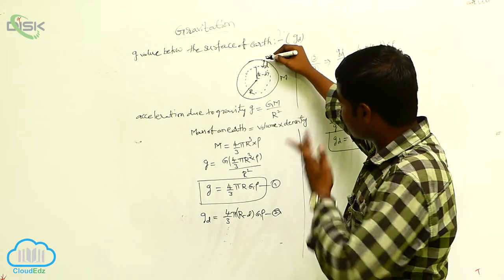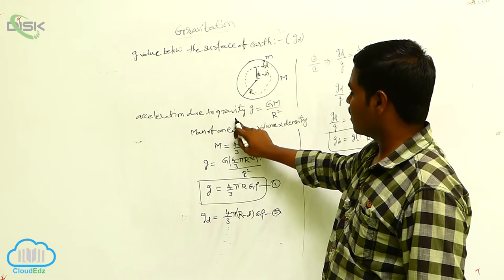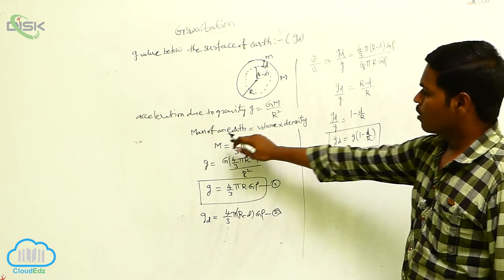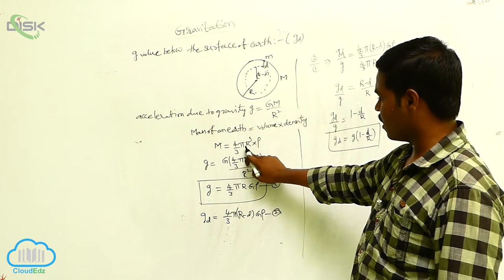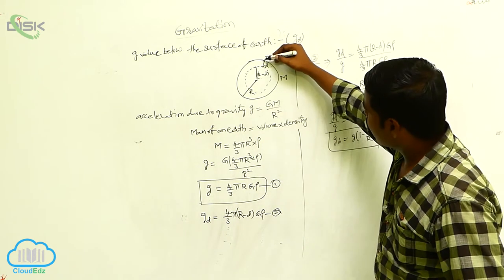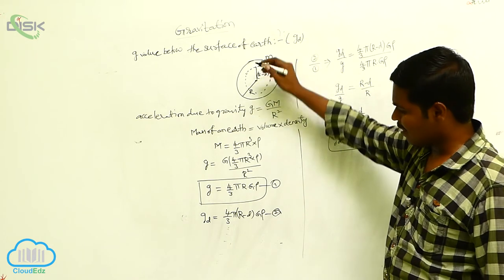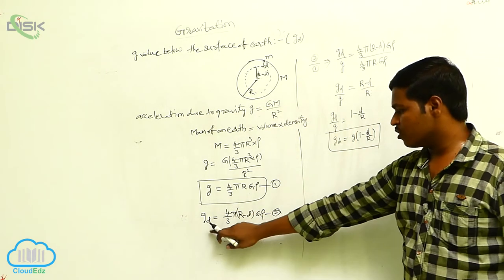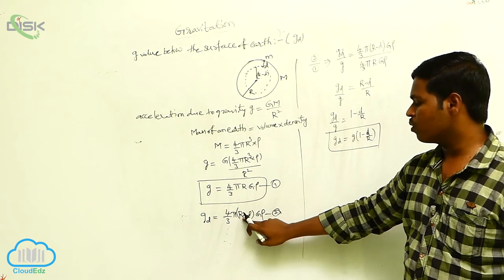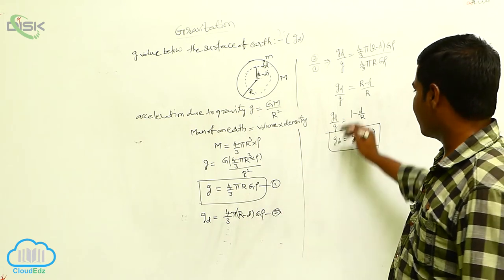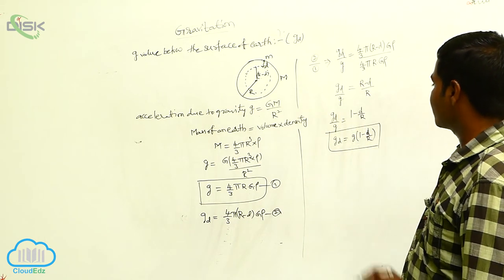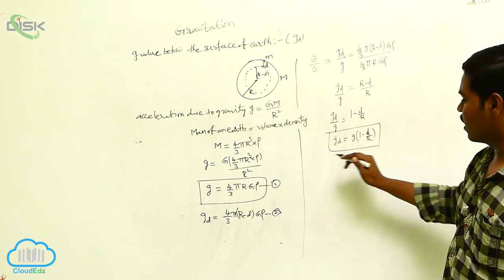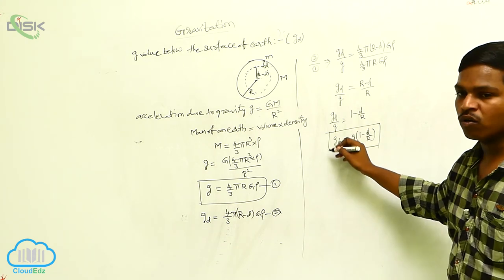On the surface of the earth, the acceleration due to gravity is g equals GM over r squared. Considering the density rho of the earth, the mass of earth equals volume times density, which is (4/3)πr³ rho. If the object of mass m goes below the surface, the distance is r minus d, and the acceleration due to gravity g_d equals (4/3)π(r minus d)G rho. By dividing the two equations, we get g_d equals g(1 minus d/r). As the depth increases below the surface, the acceleration due to gravity also decreases.